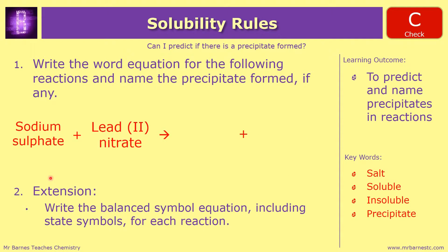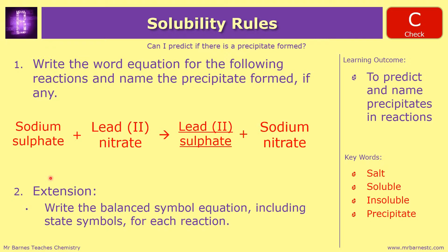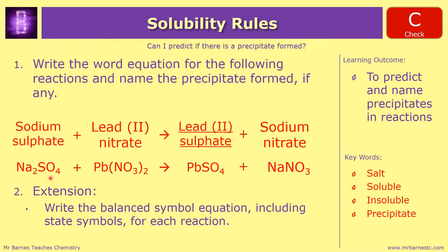The next one: sodium sulfate and lead nitrate is going to give you sodium nitrate and lead sulfate - one mark for that. Our precipitate is going to be lead sulfate. For the balanced equation: sodium sulfate is Na₂SO₄, lead nitrate is Pb(NO₃)₂, which gives you lead sulfate PbSO₄ and sodium nitrate NaNO₃. All you need to do to balance that is put a 2 in front of the NaNO₃. State symbols: aqueous, aqueous, solid, aqueous. Five marks total: one for the word equation, one for the precipitate, two for the balanced equation, and one for the state symbols.